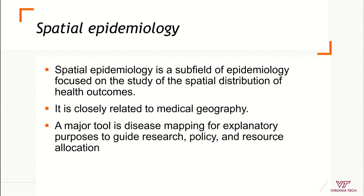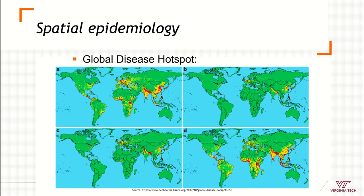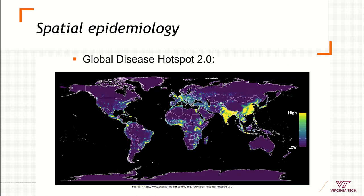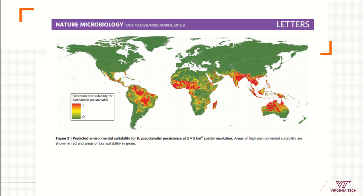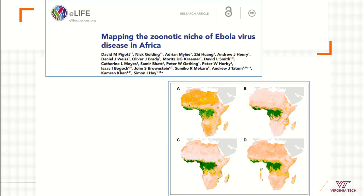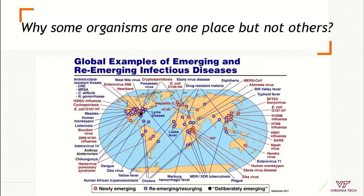Examples include identifying hot spots of transmission at the global level. Here is one example of emerging diseases globally, another example of infectious diseases globally especially from wildlife, another example for a specific disease where authors used several variables, and another example for Ebola in Africa where authors used information on wildlife reservoirs. These tools can be used for many infectious diseases to identify what environmental factors are related to transmission.